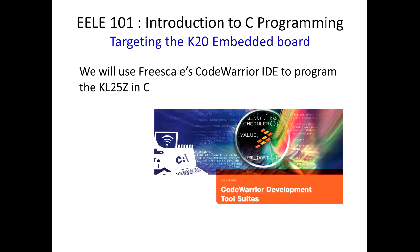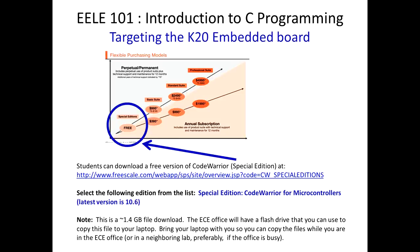To program it in C, we will use Freescale's CodeWarrior integrated development environment, which provides a free version. You can download it from the provided link — find the Special Edition CodeWarrior for microcontrollers, latest version 10.6. The offline version means you download everything without going back to the internet to get anything. It's a large download at 1.4 gigabytes, so if you have a limited internet connection, don't download it that way. We'll have a thumb drive in the EC office where you can come by and copy the file to your laptop.